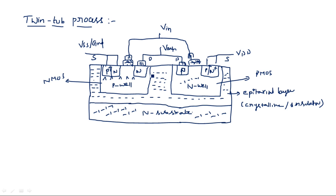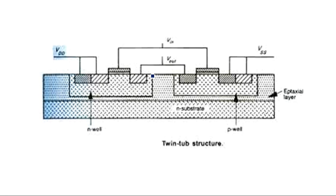Looking at the diagram more clearly: we have considered an N-type substrate, and entirely the upper half of this substrate is created as an epitaxial layer — an insulator with a crystalline structure. The remaining regions are the P-well and N-well, as discussed. This is the twin-tub process, which is the third and final structure of the CMOS fabrication process.